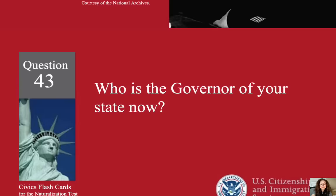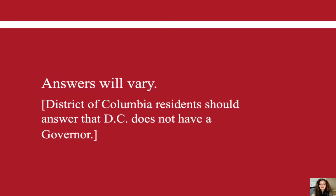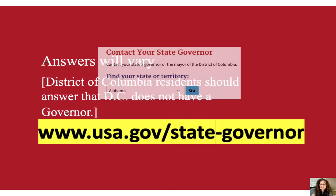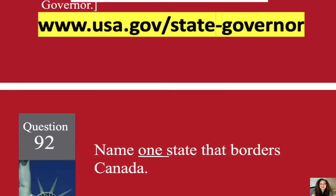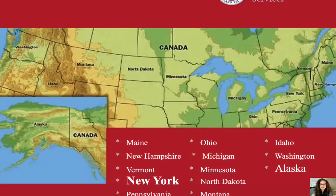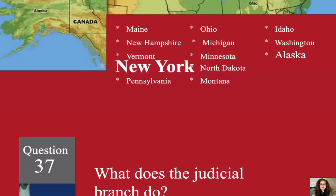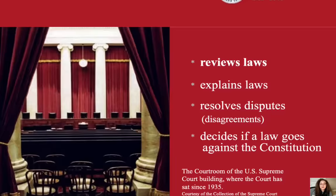Who is the governor of your state now? The answers will vary here. You can go to the USA.gov website and click on your state to find your governor, or just ask us below. Name one state that borders Canada. New York. What does the judicial branch do? Reviews laws.